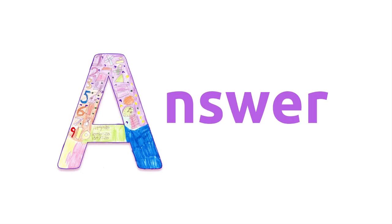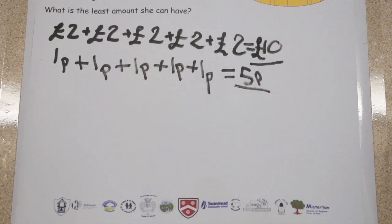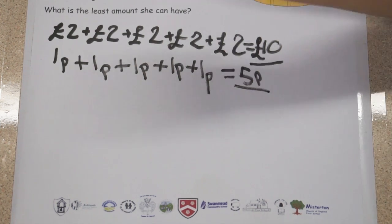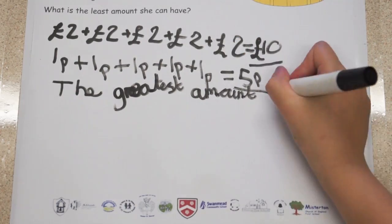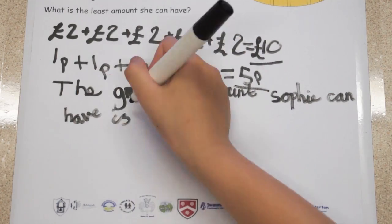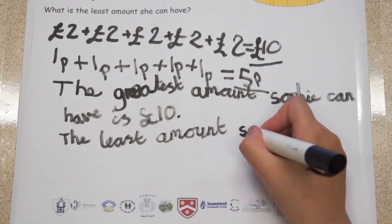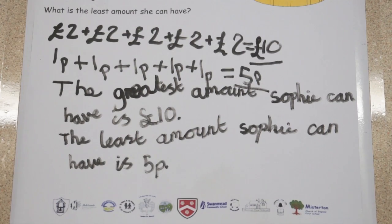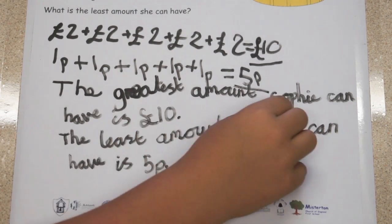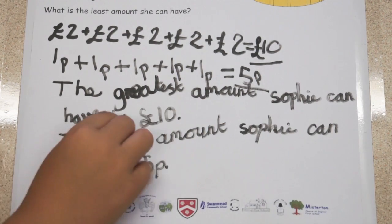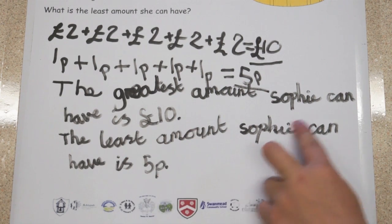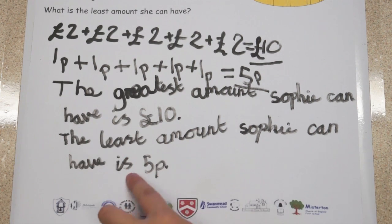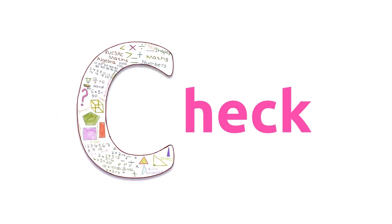A is for answer. But is that our final answer? No — we need to write out two sentences. The greatest amount Sophie can have is £10. The least amount Sophie can have is 5p.